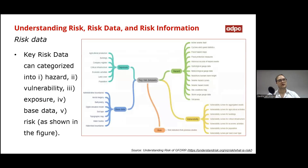When it comes to risk data, it can be categorized into five types: 1. Hazard, 2. Vulnerability, 3. Exposure, 4. Base data, and 5. Risk, as shown in the figure to the right.